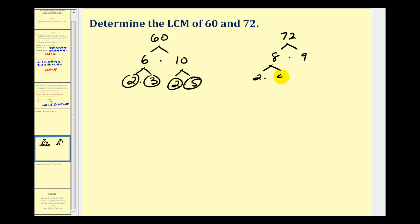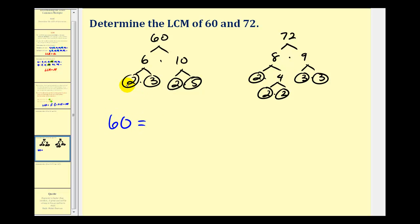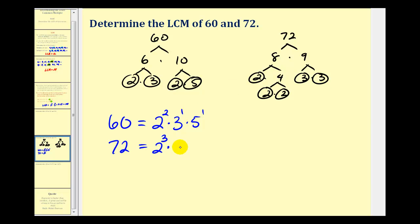For seventy-two, let's use eight times nine to start. Neither of these are prime. Eight is equal to two times four; two is prime and four is equal to two times two, both prime. Nine is equal to three times three, both prime. So the prime factorization of sixty is two squared times three to the first times five to the first, since we have two factors of two, one factor of three, and one factor of five. For seventy-two, we have three factors of two, so two to the third, and two factors of three, so three to the second.